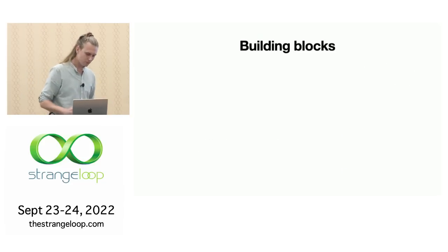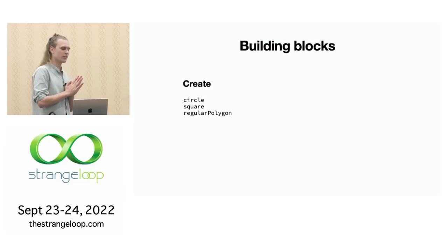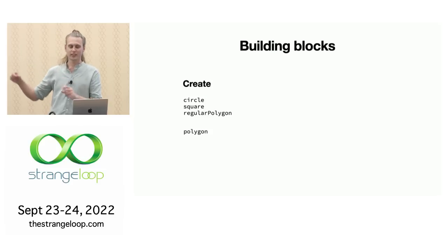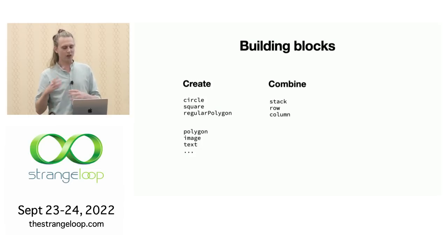Before I move on, I'm going to summarize what we've seen so far and talk about building blocks. So we saw some building blocks for creating diagrams from scratch: circle, square, regular polygon. There's more stuff like a general polygon where you can give it any number of points, a rectangle, and a way to include an image or text. And then all of these are diagrams. And then there are these functions: stack, row, and column. We saw all of them that you use to combine them. And there's really only these three, basically.